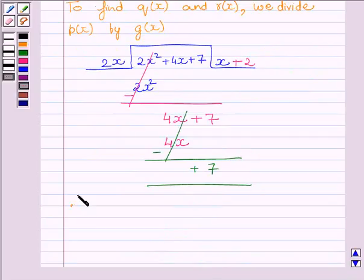Therefore, Px is equal to 2x squared plus 4x plus 7, Gx equals 2x, Qx equals x plus 2, and Rx equals 7.